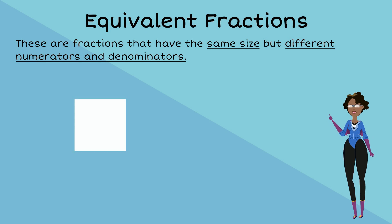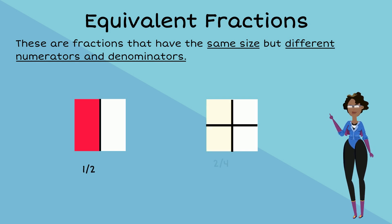For example, if we look at a square that is cut into two equal parts and the same square cut into four equal parts, we see that one half is the same as two quarters.